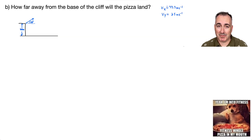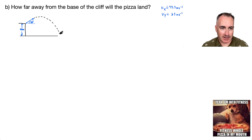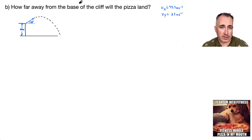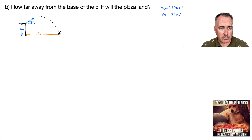We have a Part B. Because it's about pizza — I'm into fitness, fitness, whole pizza in my mouth. Anyway, the path still goes like a parabola, but now we're asking: how far from the base of the cliff will it land? We're looking for this horizontal distance, which I'll call Sx — the x-component of the displacement.